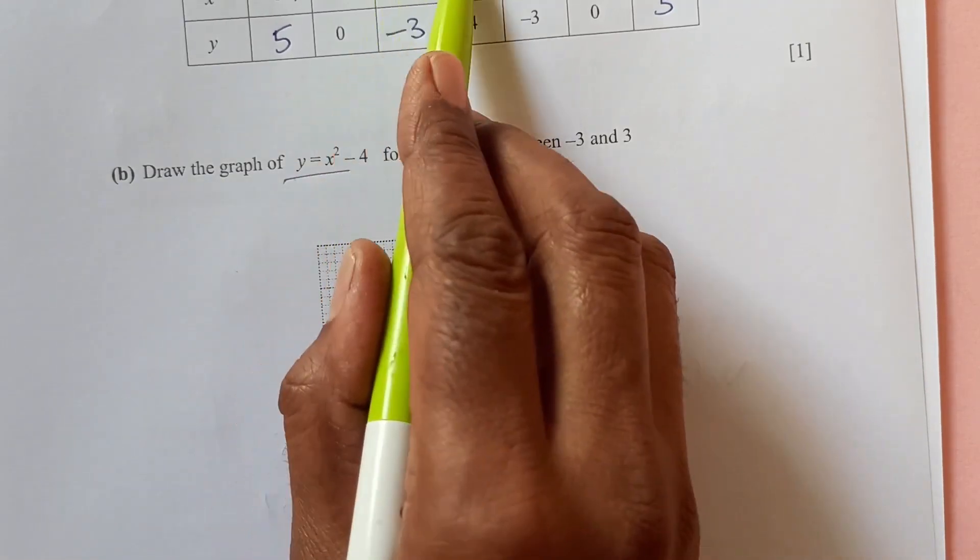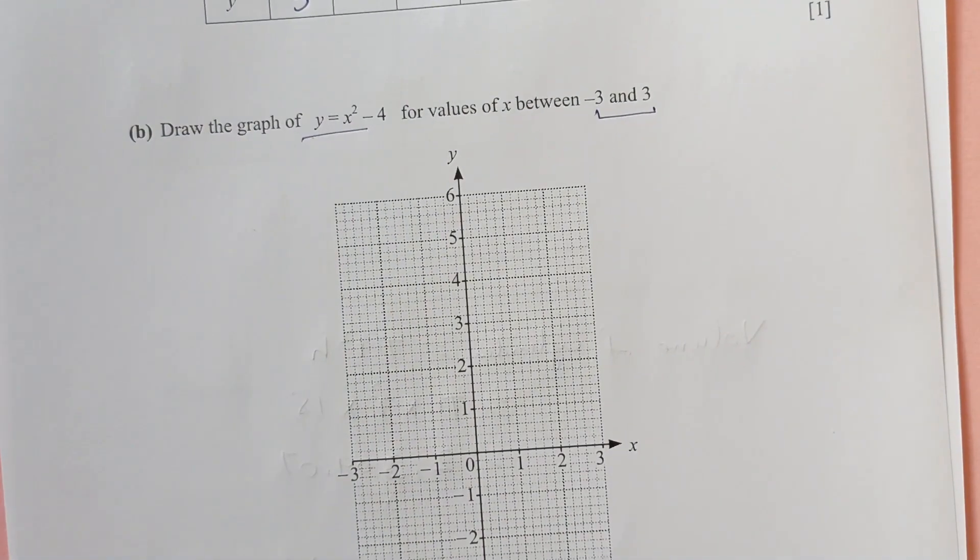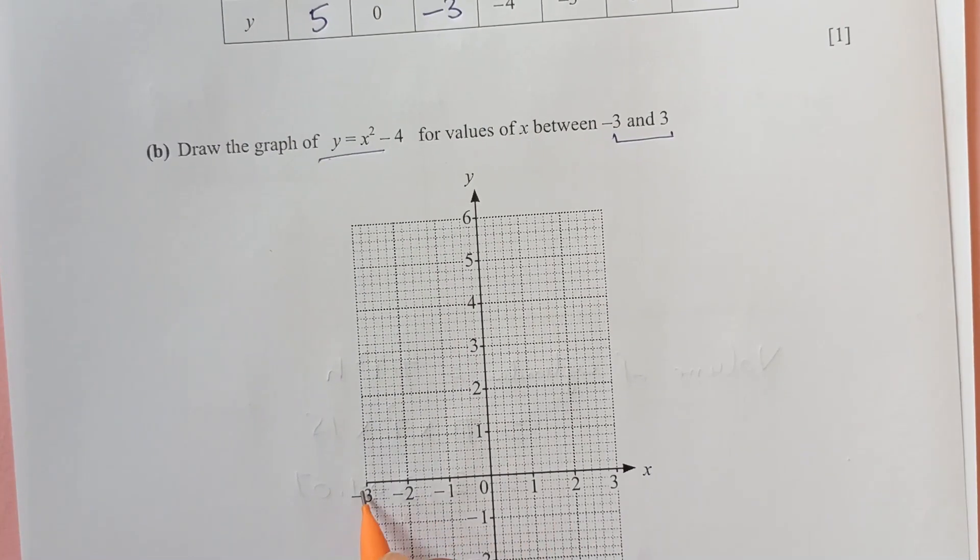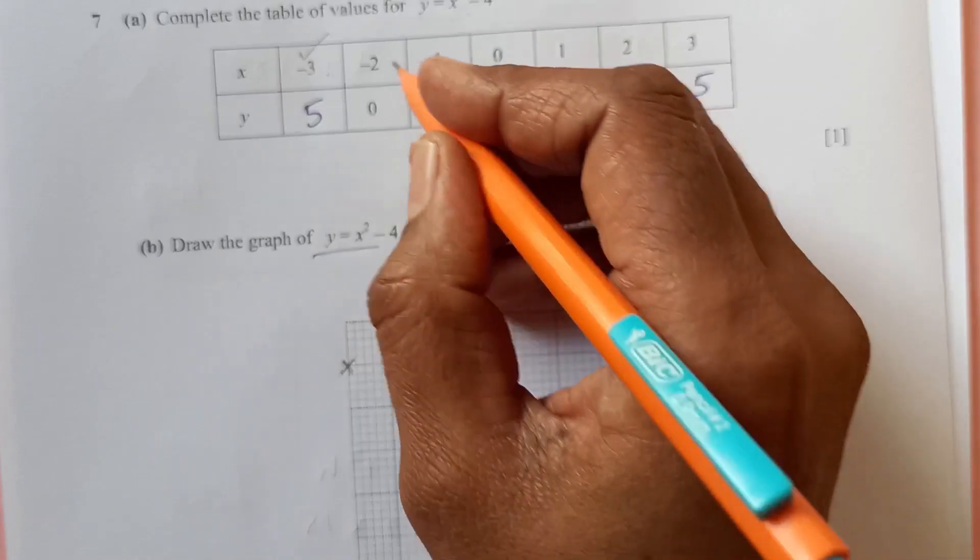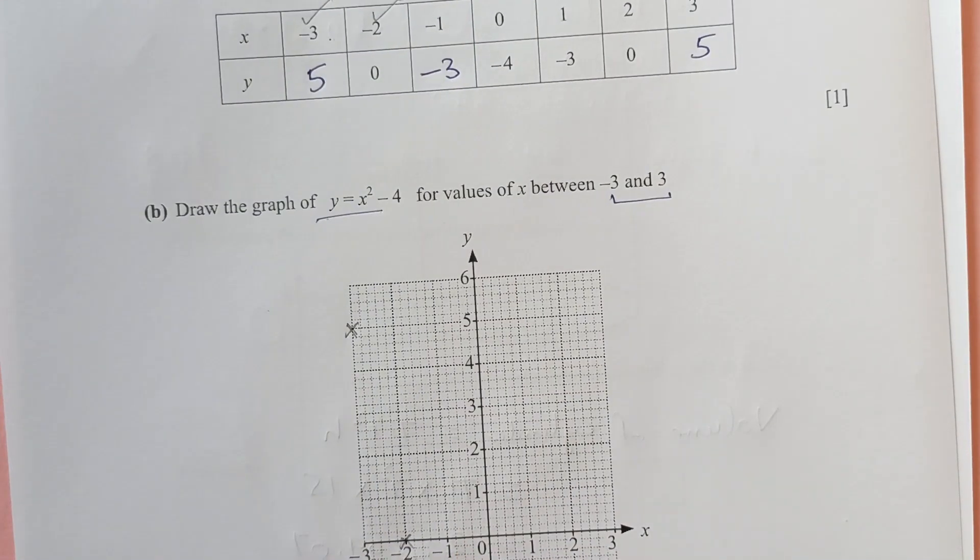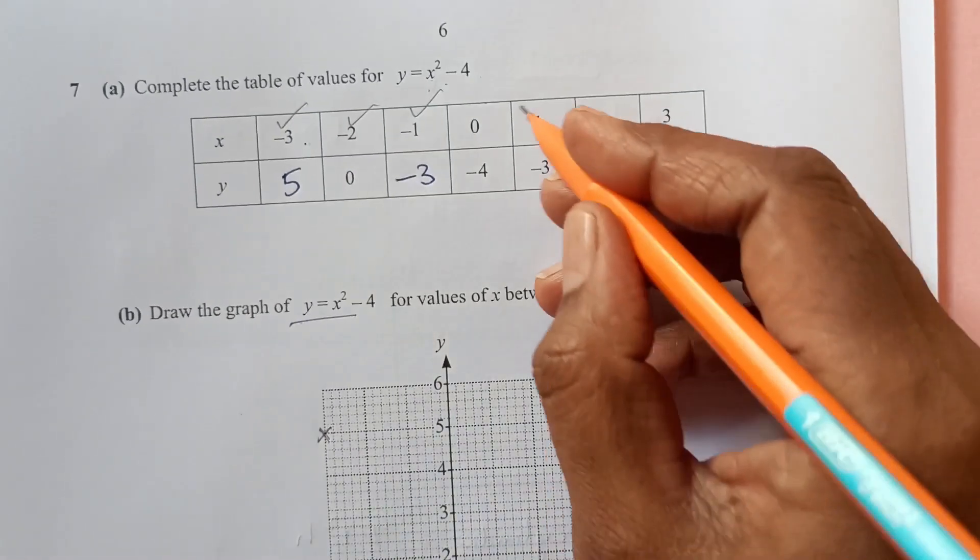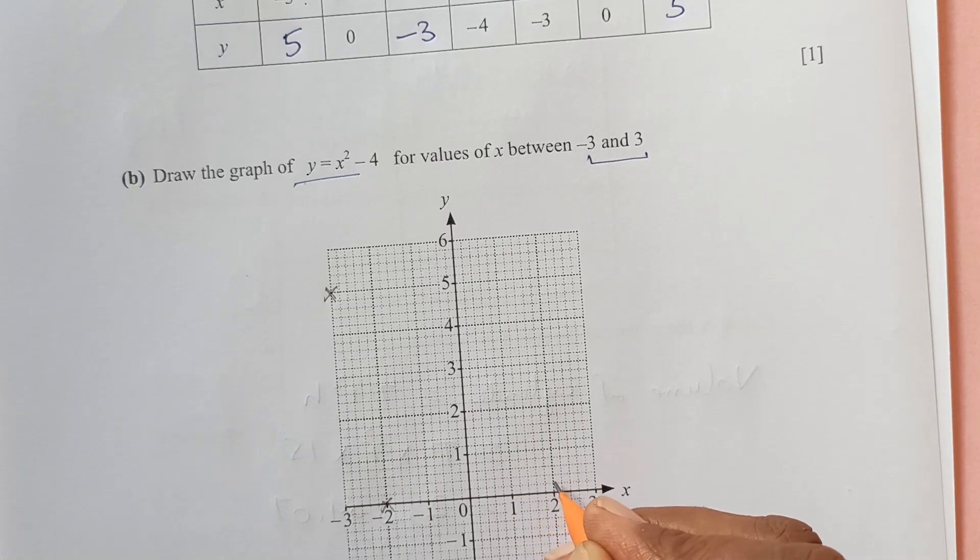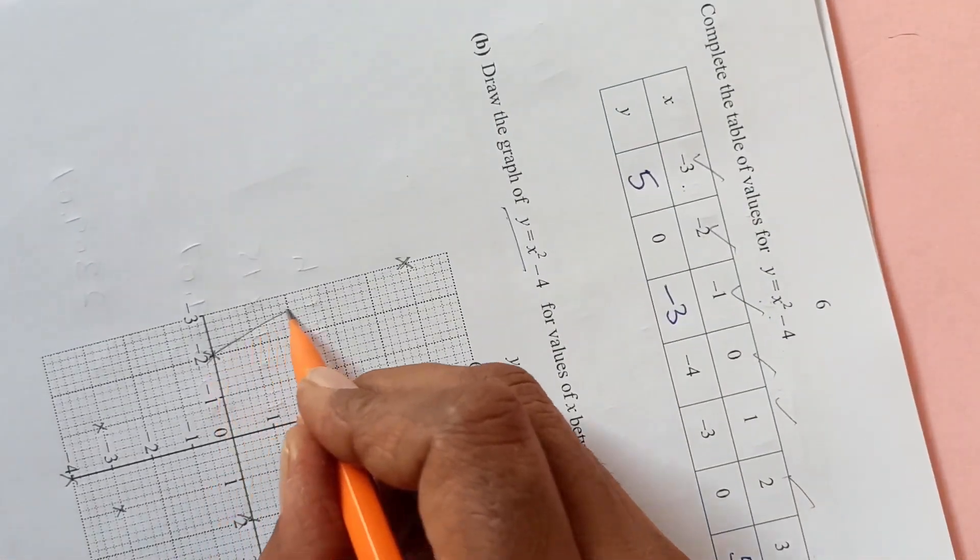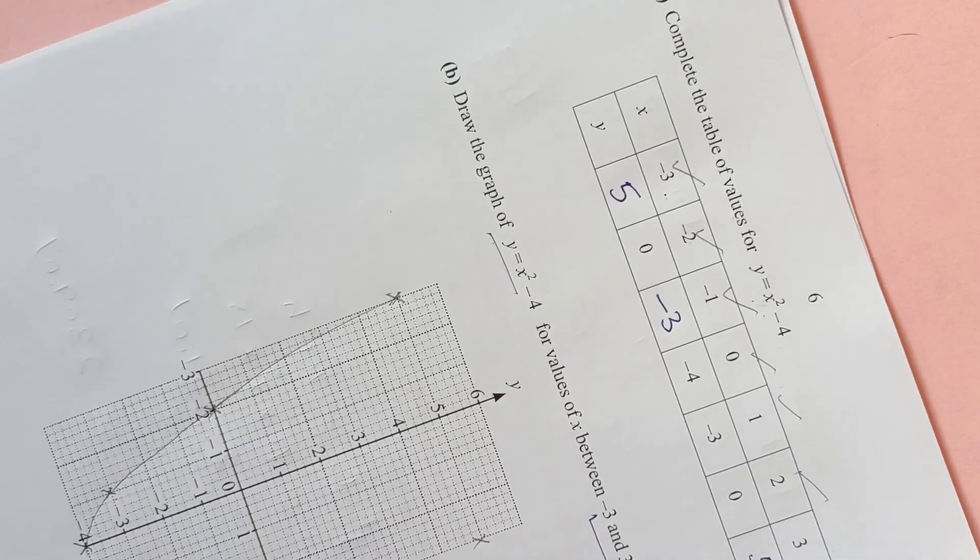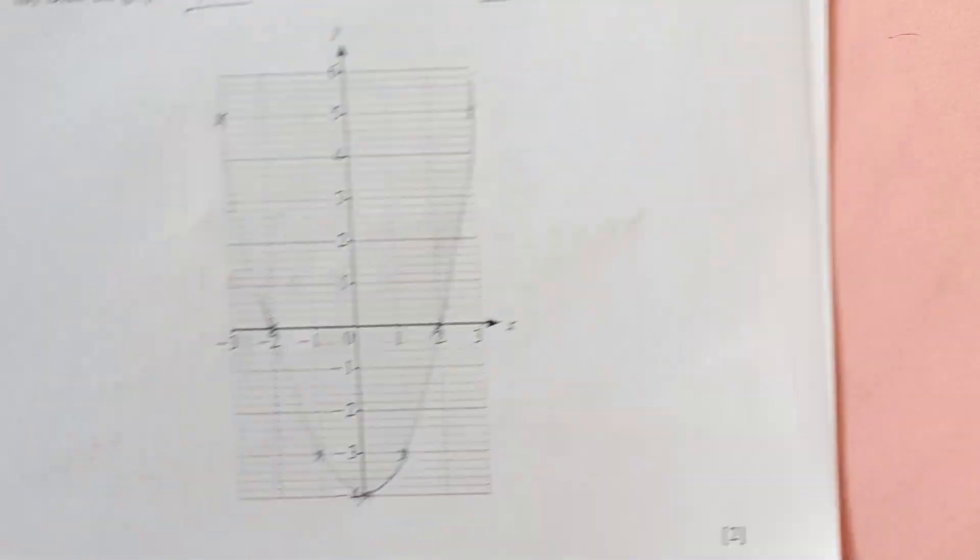Now, draw the graph of y equals to x squared minus 4 for values of negative 3 to 3. We are already given these values here. We are just going to plot them here. x negative 3 and y 5. x negative 3 is here. y 5, it is here. x negative 2 and y 0 is here. Then, x negative 1 and y negative 3. It is here. x 0 and y negative 4. x 1, y negative 3. x 2, y 0. x 2, y 0. And x 3, y 5. x 3, y is 5. I am going to join this line. It is a freehand curve. Just join all the points. Like this. So this is the graph.